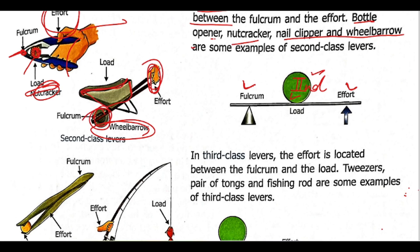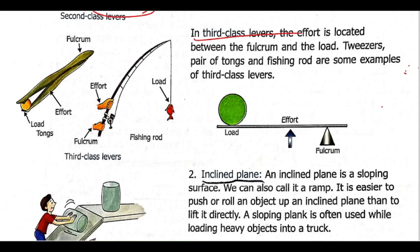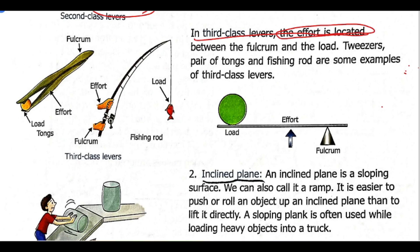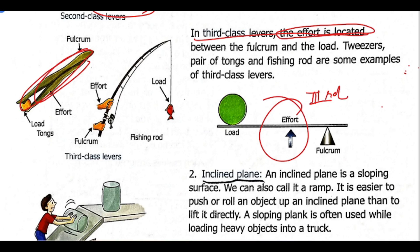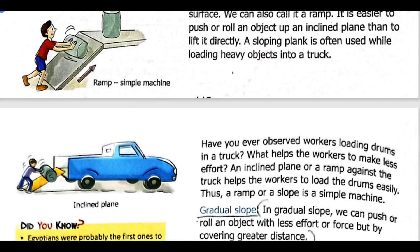For third class lever, the effort is between the fulcrum and the load. The example is tongs — you pick a roti with tongs; the joint part is the fulcrum which is fixed, load is on one side, and effort is applied inside. Another example is a fishing rod — load is on one side, effort is inside, and fulcrum is at the end.